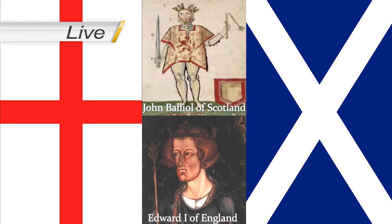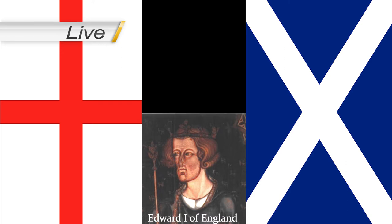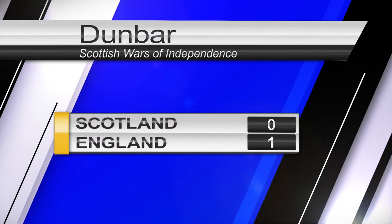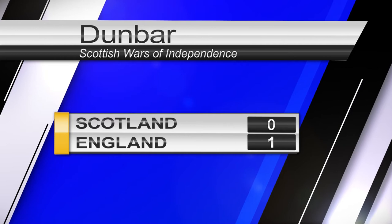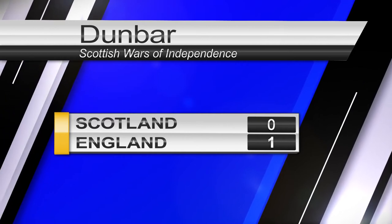John Balliol has now surrendered himself, confessed to rebellion against Edward and abandoned the treaty with France. He's being unceremoniously stripped of his royal vestments and taken back to England along with the Stone of Destiny. Without a king, the country is being stripped of its identity and Edward is spending the rest of the year installing English lords throughout Scotland. It looks like the War of Independence may be over already. 1-0 to England.